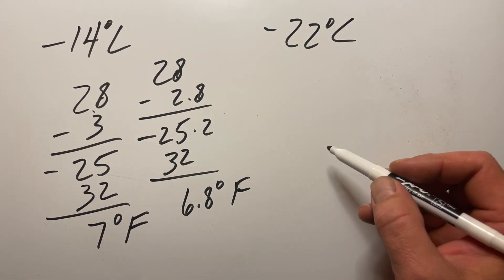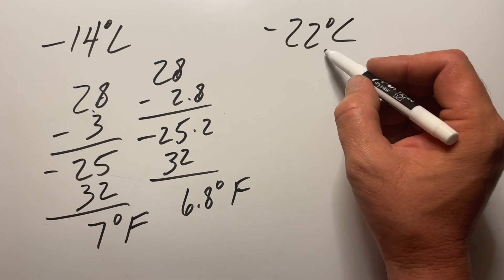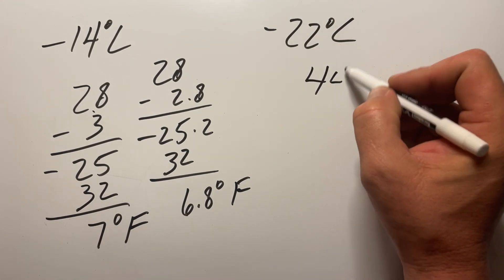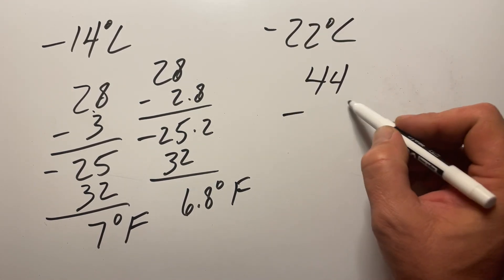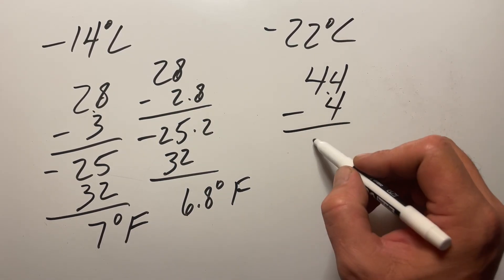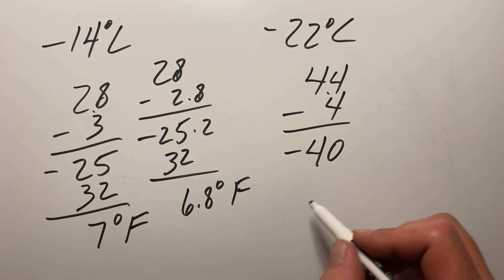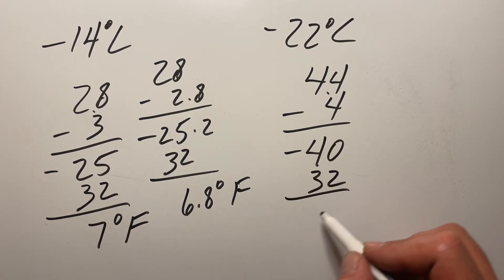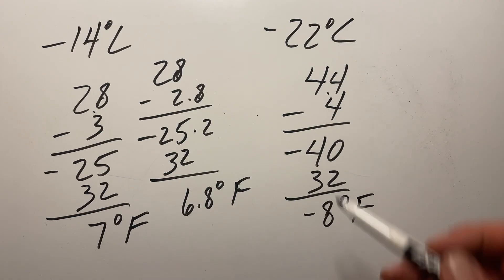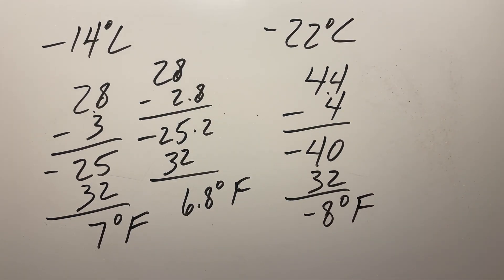Now we'll do negative 22. Again, ignore the negative for now and just work with 22: double to 44, move one decimal place gives 4.4, round down to 4, so 44 minus 4 is 40. Because it started as a negative, put it back as a negative, add 32, and that becomes negative 8 degrees Fahrenheit.